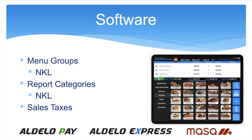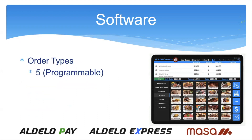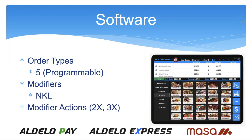There is a limit on the number of sales taxes, and that number is three. There's also a limit on order types: we have five, and they're all programmable, so you can change the description of each. Modifiers have no known limit — have as many as you wish. Modifier actions — things like light, only, on the side, double, triple — are all programmable, and there are 10 of those available in the system.